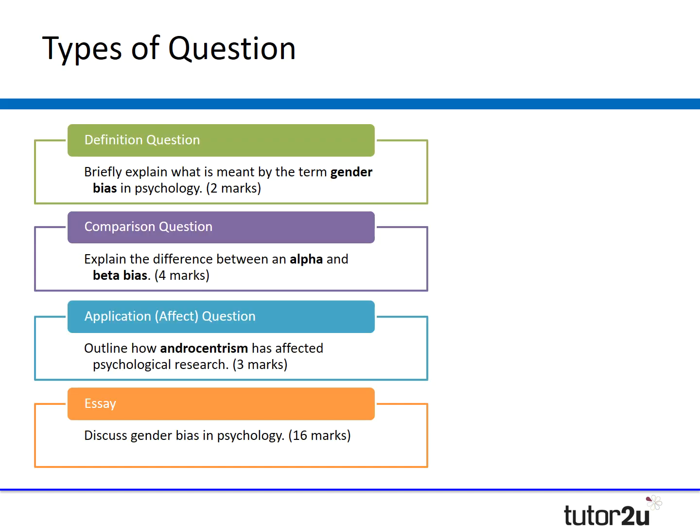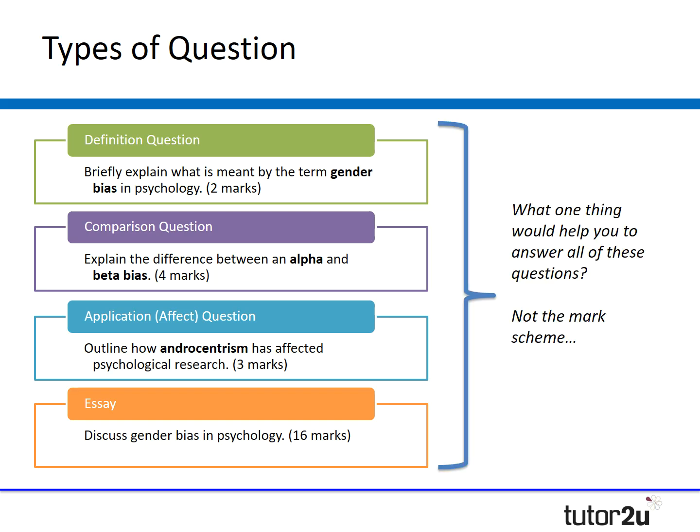The other four types of questions in this topic are quite hard. The comparison and application questions would be very difficult to answer unless we knew more about the topic. What jumps out with gender bias is you need something more to help you answer these different types of questions — not a mark scheme, but examples. My big point for this webinar is it's not enough to know the definition of alpha bias or beta bias. You actually need examples of where these occur throughout psychology to really demonstrate and show off your understanding.